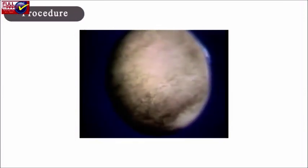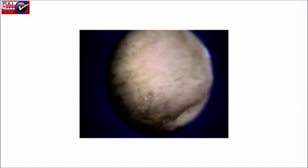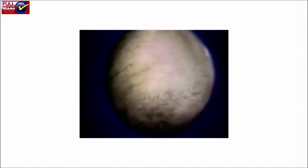Procedure: The zygote undergoes a few cycles of mitotic division to form a solid ball of cells called morula. The cell continues to divide and at the later stages a cavity is formed within it. This stage is called blastula.